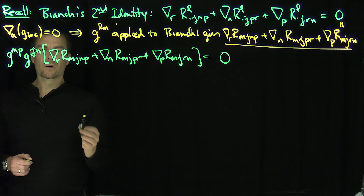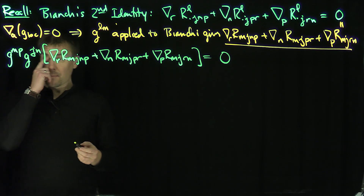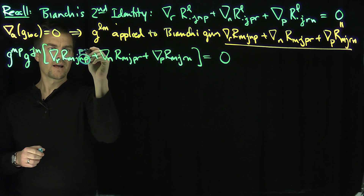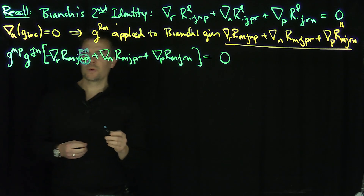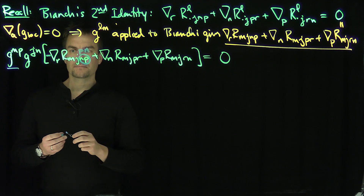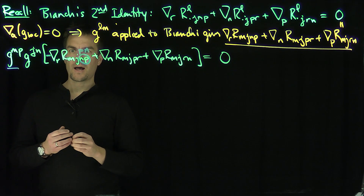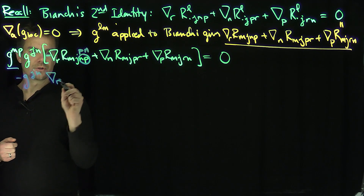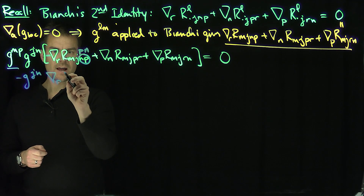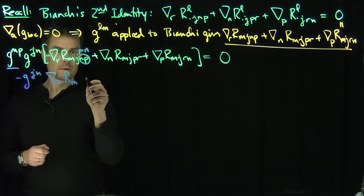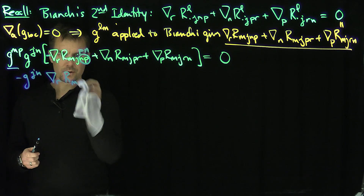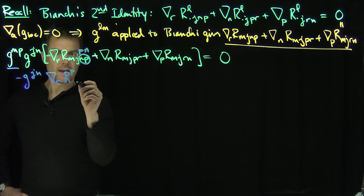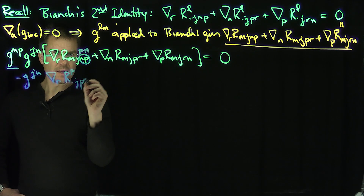Now I'm going to work on this expression. For the first term, I'm going to flip P and N — the P goes here and the N goes there — and that makes a negative sign. Then hitting that with G^MP raises M to P. So the first term becomes negative G^JN times the R-covariant derivative of R^P_JPN.